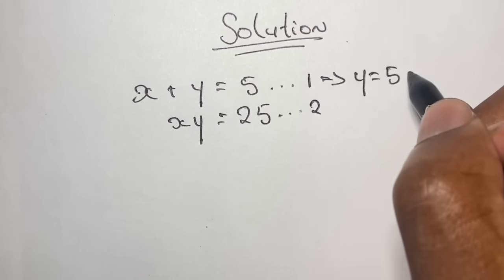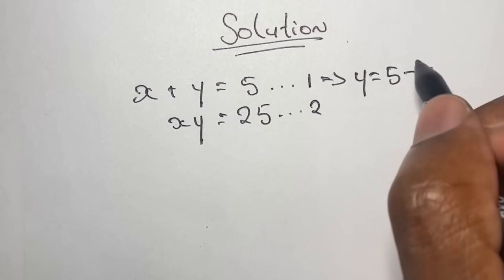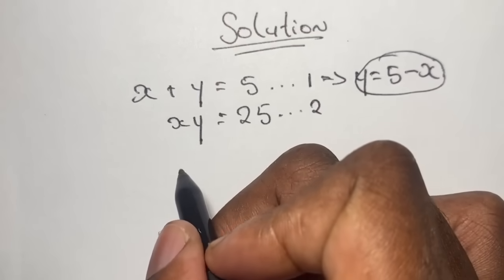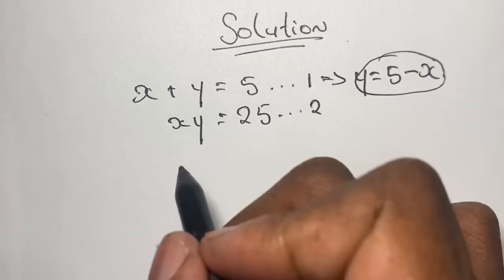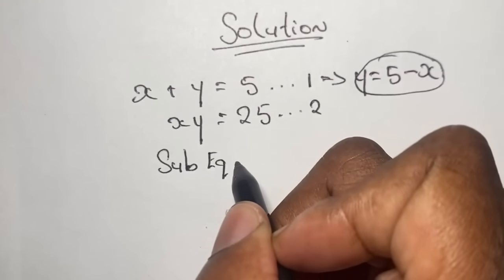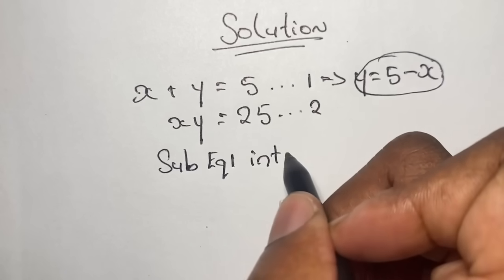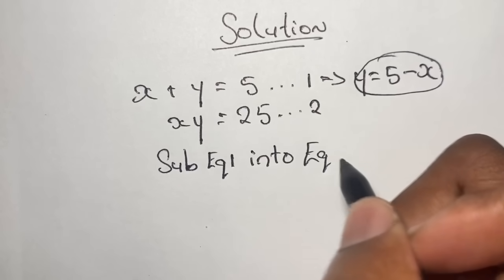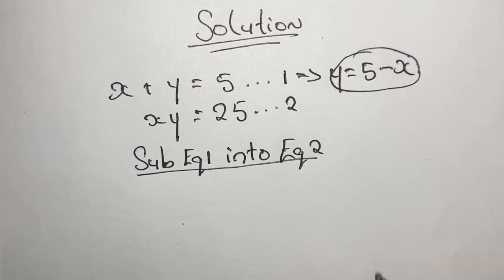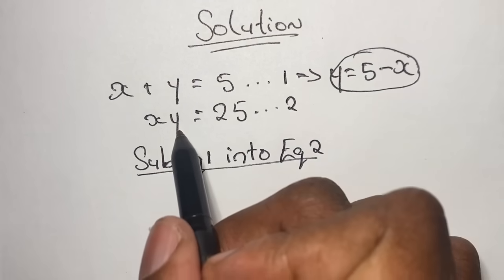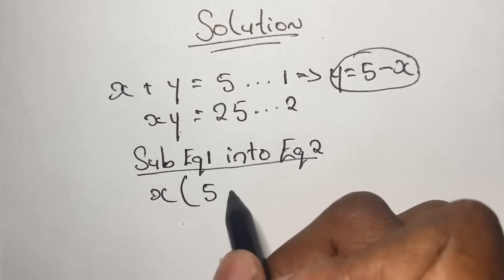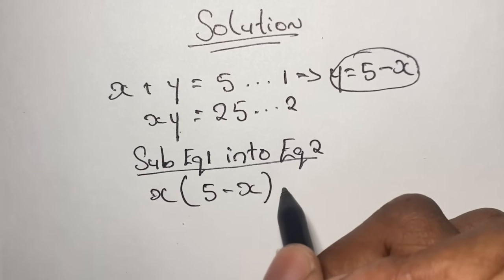With the substitution method, the value of one variable in one equation is substituted into the other equation. In this example we'll be substituting the value of y in equation 1 into the value of y in equation 2. So we'll now have x times the value of y, which is 5 minus x, and that equals 25.